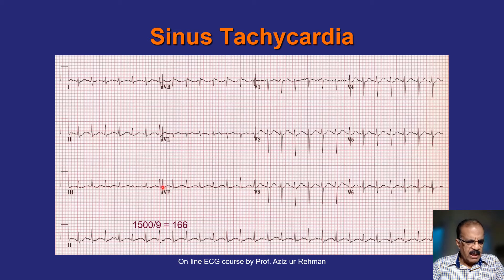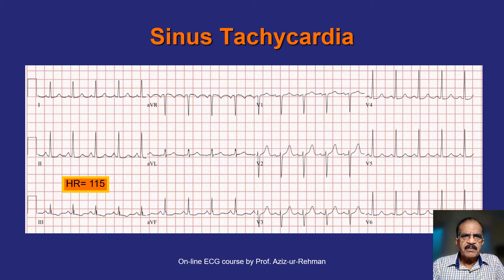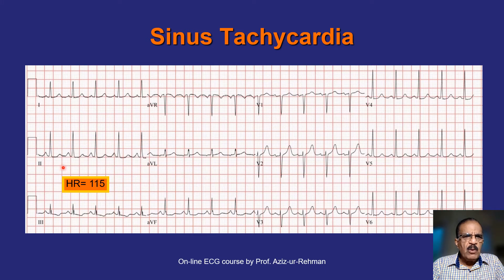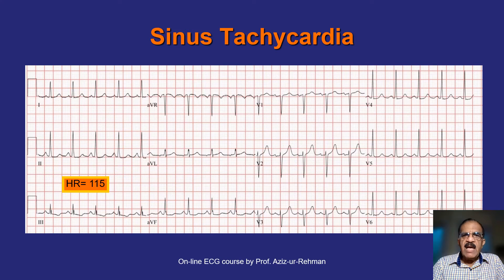Here is another example of sinus tachycardia. The heart rate calculated is 115 beats per minute. You can see absolutely regular PQRS complexes throughout. This is another example of sinus tachycardia — the heart rate is lower, though by definition any rate more than 100 is tachycardia.